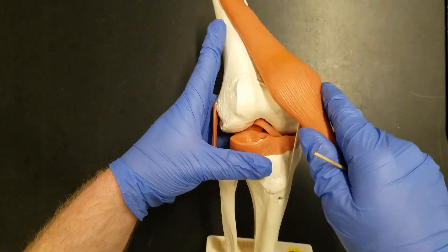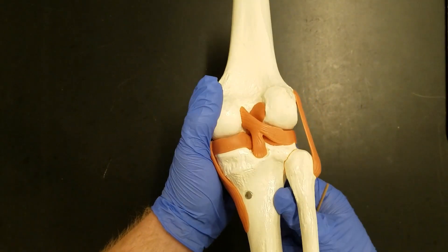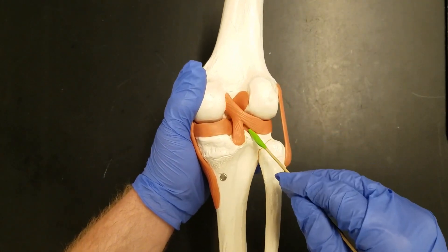Now an easier way to see the PCL is to simply turn the model around to the backside and here we can see the PCL very clearly.